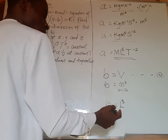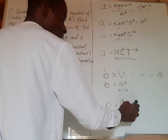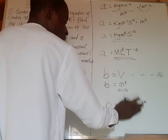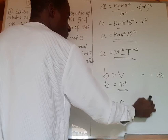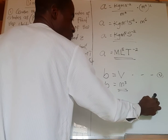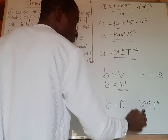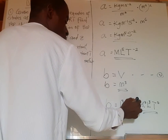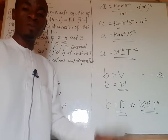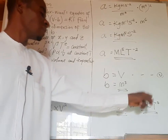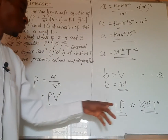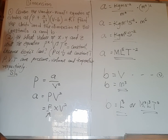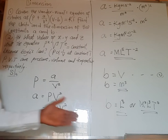In some cases we write it as M⁰L³T⁰, because M⁰ equals 1 and T⁰ equals 1, so this is the same as L³. Both expressions are equivalent.